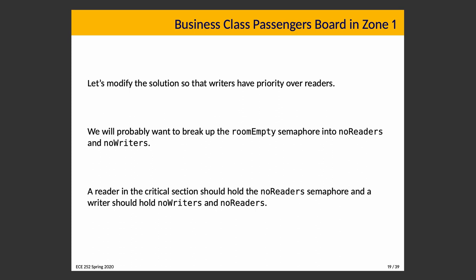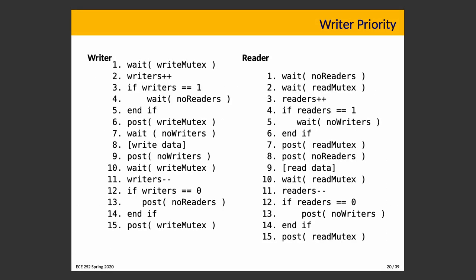A reader in the critical section should hold the no_readers semaphore, and a writer should hold no_writers as well as no_readers. Our solution has become a lot more symmetrical compared to previously. Previously the writer code was a lot shorter and simpler compared to the reader code, but now they are close to the same length and are, to some extent, a mirror image of one another.